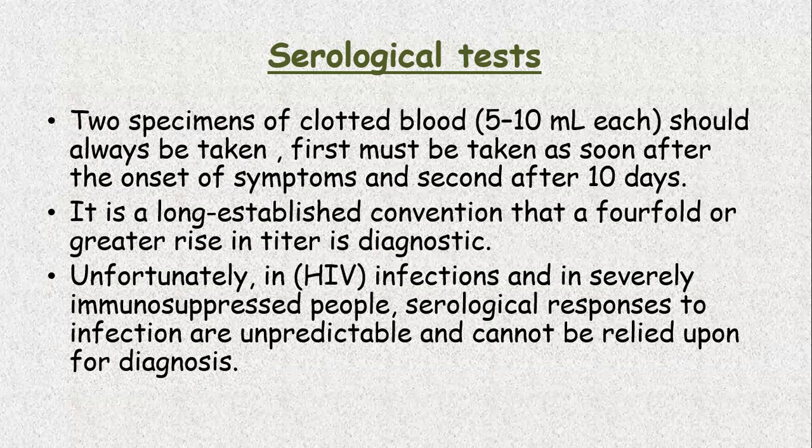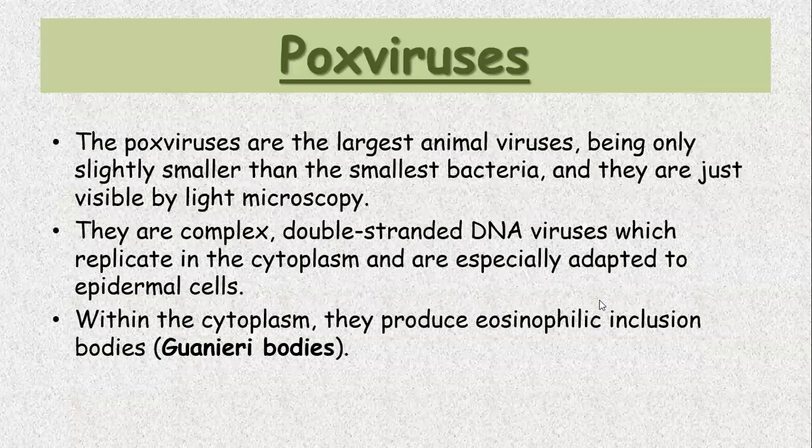Immunoglobulin G will be positive if a person suffers from a viral infection and will keep on remaining positive. The level of IgG does not show whether the infection is acute or chronic — only IgM will suggest that it is an acute infection. Unfortunately, in HIV infections and in severely immunosuppressed people, serological responses to infection are unpredictable and cannot be relied upon for diagnosis.